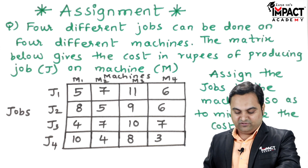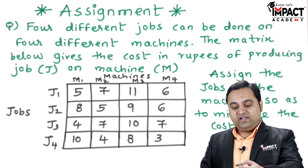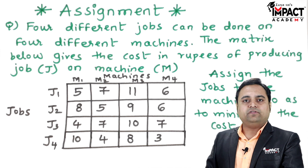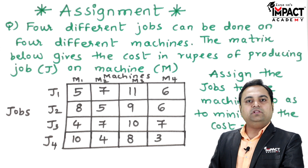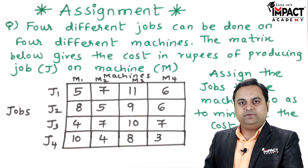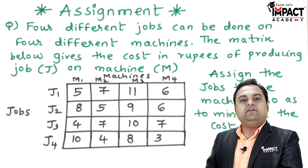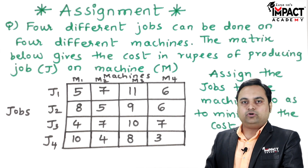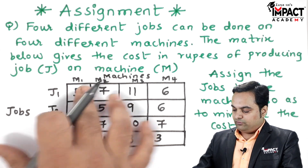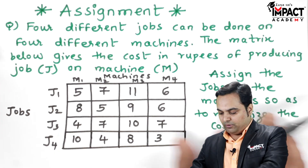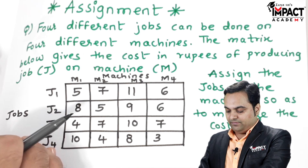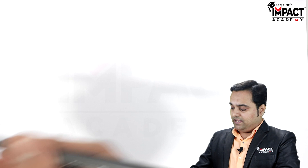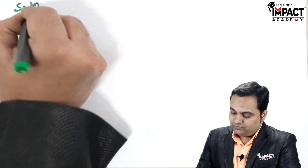To start such an assignment problem, first check whether the number of rows and columns are equal. If they are equal, it is a balanced assignment problem. If not, we add a dummy row or column. Here there are four rows and four columns, so no dummy is needed. The method we are using is called the Hungarian method.